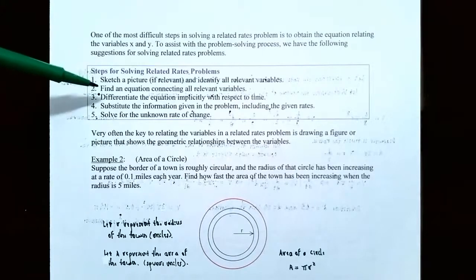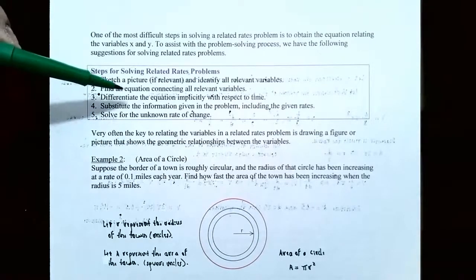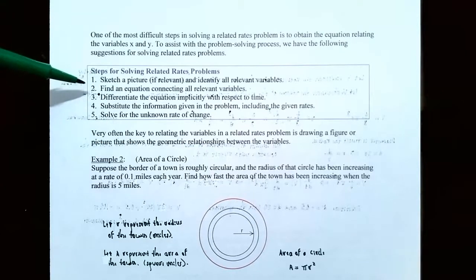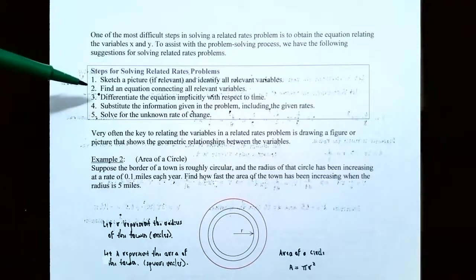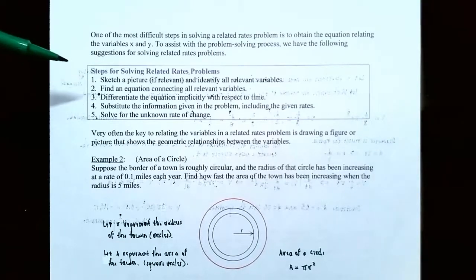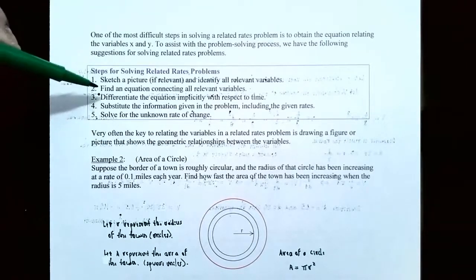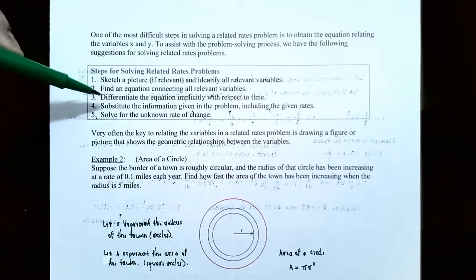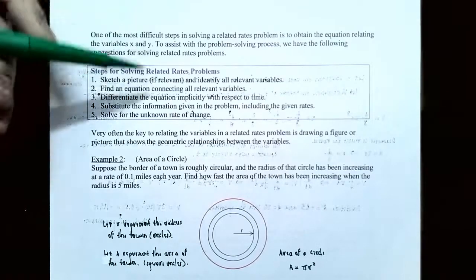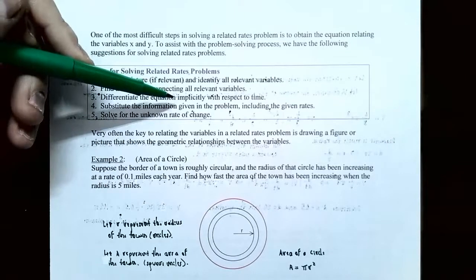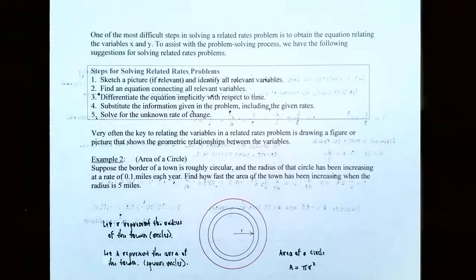Step two: find an equation connecting all the relevant variables. Most of the time after drawing your picture, it will involve a geometric formula that relates all the variables — like the area of a circle, the volume of a cylinder or sphere, or even the Pythagorean theorem. Step three: differentiate the equation using implicit differentiation with respect to time t.